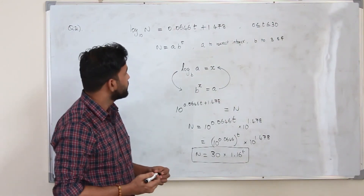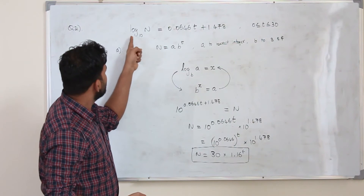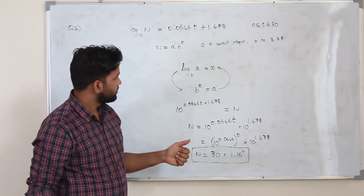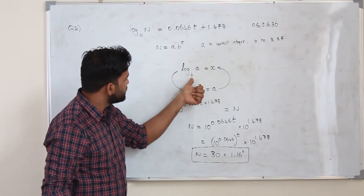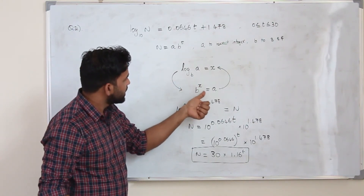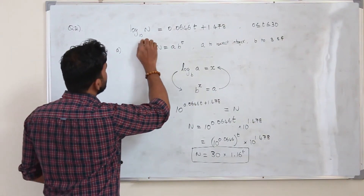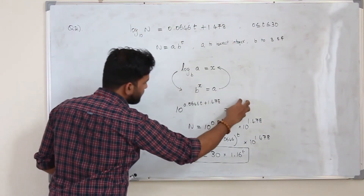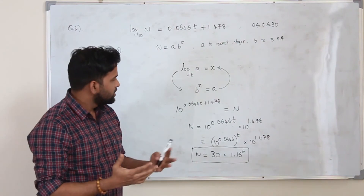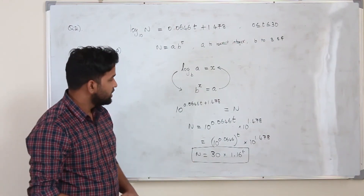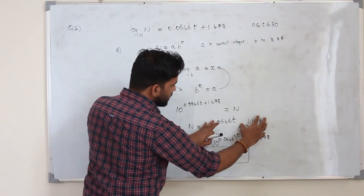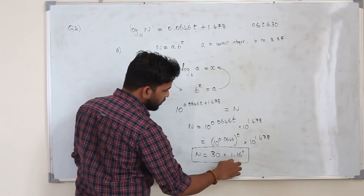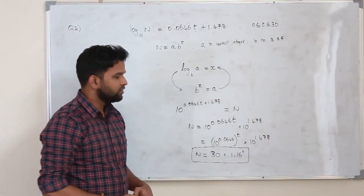To summarise: to get rid of a logarithmic function, rewrite log_b(a) = x as b^x = a. We then simplified using laws of indices by splitting into two terms: 10^1.478 ≈ 30 to the nearest integer, and 10^0.0646 ≈ 1.16 to three significant figures.